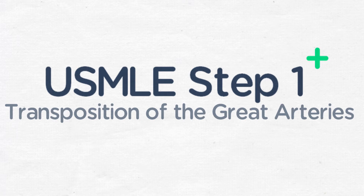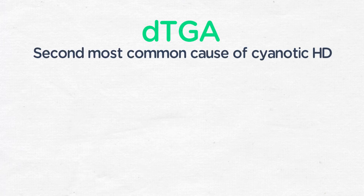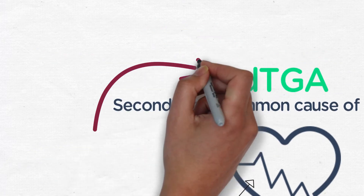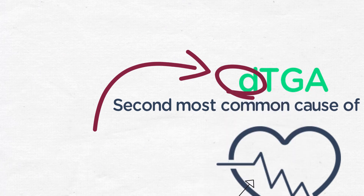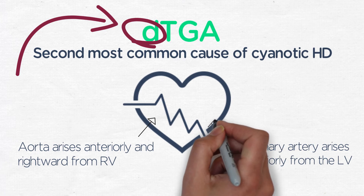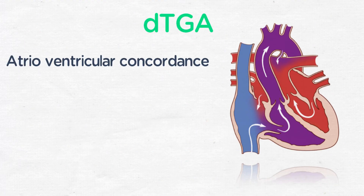Transposition of the great arteries, also commonly referred to as DTGA, is the second most common cause of cyanotic heart disease after tetralogy of Fallot. In this lesion, the aorta arises anteriorly and rightward — hence the letter D, which refers to the aortic position relative to the pulmonary artery — and comes off of the morphologic right ventricle, and the pulmonary artery arises posteriorly from the left ventricle. You can also think of this as atrioventricular concordance and ventriculo-arterial discordance.